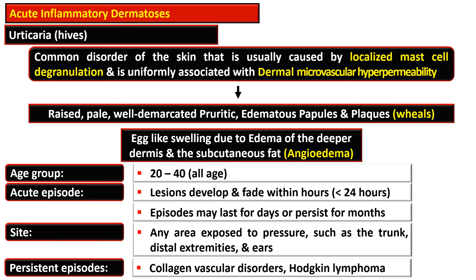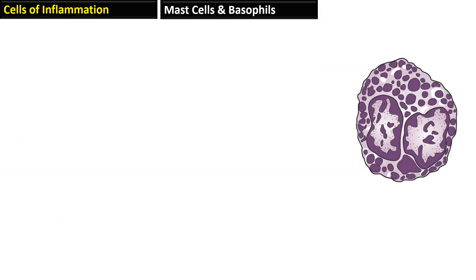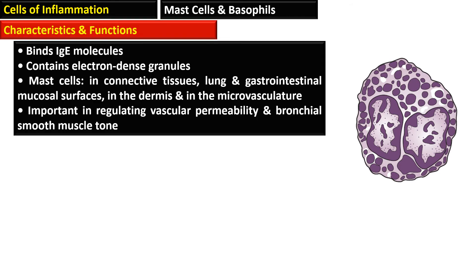In most cases, the causative agent is unknown. The cell involved in this pathogenetic mechanism is the mast cell. It binds with IgE molecules, contains electron-dense granules, and is present in connective tissue, lung, gut, mucosal surfaces, the dermis, and in the microvasculature.